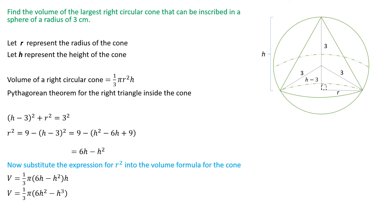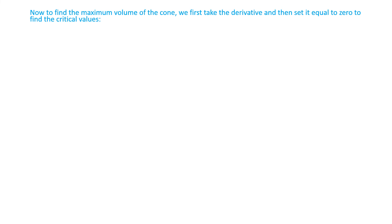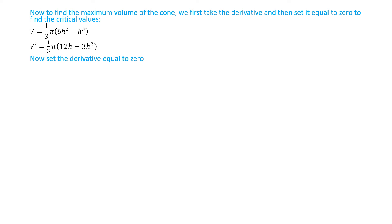Now that we have the volume function in terms of just one variable h, we're going to find the maximum volume. To do that, we take the first derivative and set it equal to zero to find the critical values — the values where we have maxima or minima. Taking the derivative using the power rule gives V'(h) = (1/3)π(12h − 3h²).